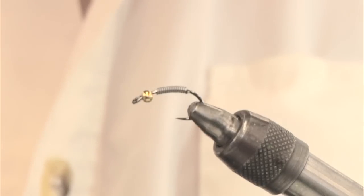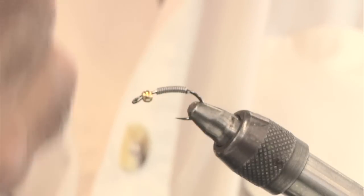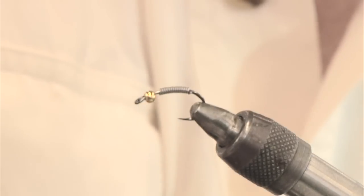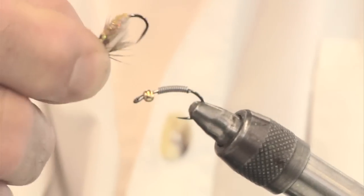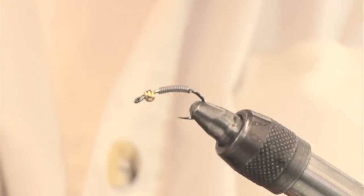This fly I'm going to tie is a Czech nymph. It is a caddis pattern that sinks like a rock because it has a bead head and 13 wraps of 020 lead. Today I'm tying a Czech nymph, a caddis pattern. This is the stage between the nymph and the adult just as it's leaving its nymph shuck. Let me just show you the finished fly to start with, and I'll show you how we get there.